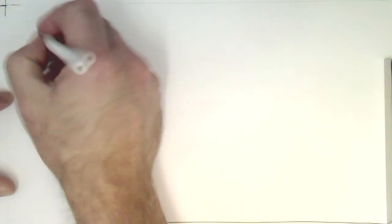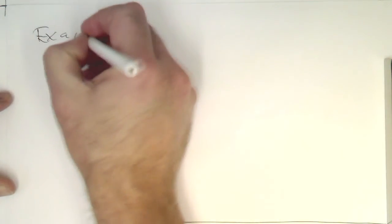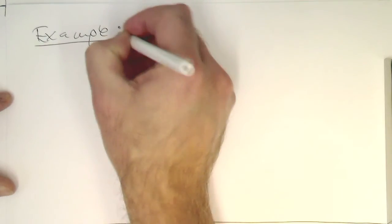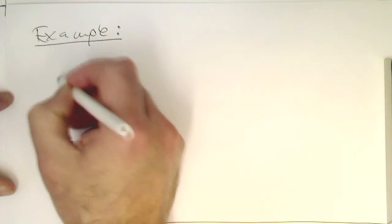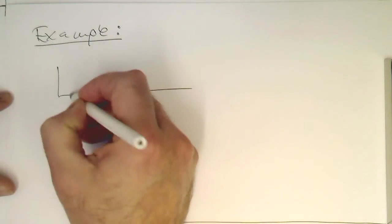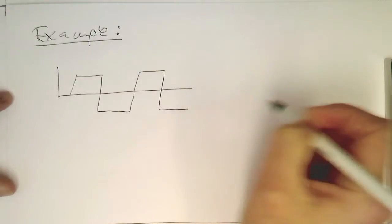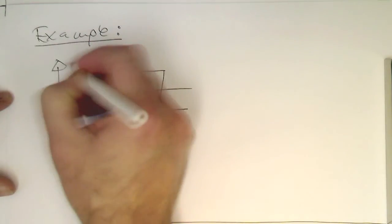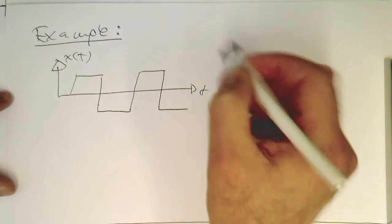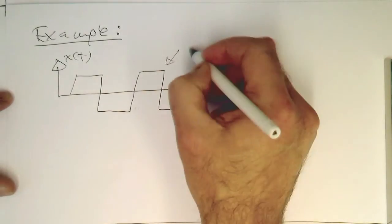So at the end, let's just do another example of a periodic signal. Let's try to construct a square wave - that's our x of t, and this is the square wave.